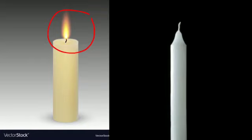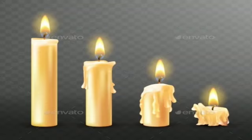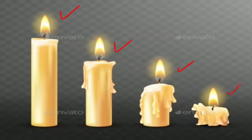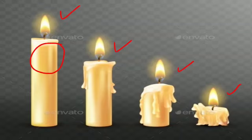لیکن جس candle کو آپ نے جلایا تھا اس پر ایک effect آپ کو نظر آئے گا - heat کا یہ effect ہوگا کہ candle تھوڑے تھوڑے دیر بعد دیکھیں گے تو اس کا size پہلے سے چھوٹا ہوگیا، مزید جلایا تو اور چھوٹا ہوگیا، مزید جلایا تو بہت چھوٹا رہ گیا۔ Heat ملنے کی وجہ سے candle کا size چھوٹا ہوگیا کیونکہ candle کا solid حصہ heat ملنے کی وجہ سے melt ہوتی ہے اور آہستہ آہستہ candle کی wax melt ہوتی رہی تو size چھوٹا ہوتا گیا۔